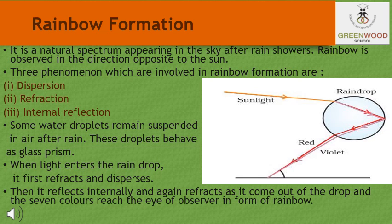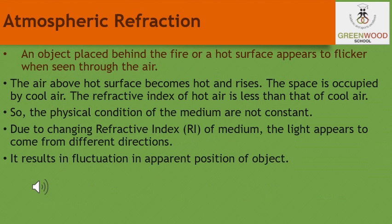You can also see a rainbow on a sunny day when you look at the sky through a waterfall or through a water fountain with the sun behind you. Now let us discuss the concept behind atmospheric refraction.